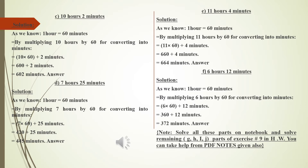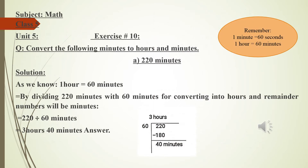Now come to exercise number 10. The question is: convert the following minutes to hours and minutes. Remember that one hour is equal to 60 minutes. Part A is 220 minutes. We have to find how many hours and how many minutes that is. Since one hour equals 60 minutes, we divide 220 minutes by 60. The quotient gives the hours and the remainder gives the minutes.